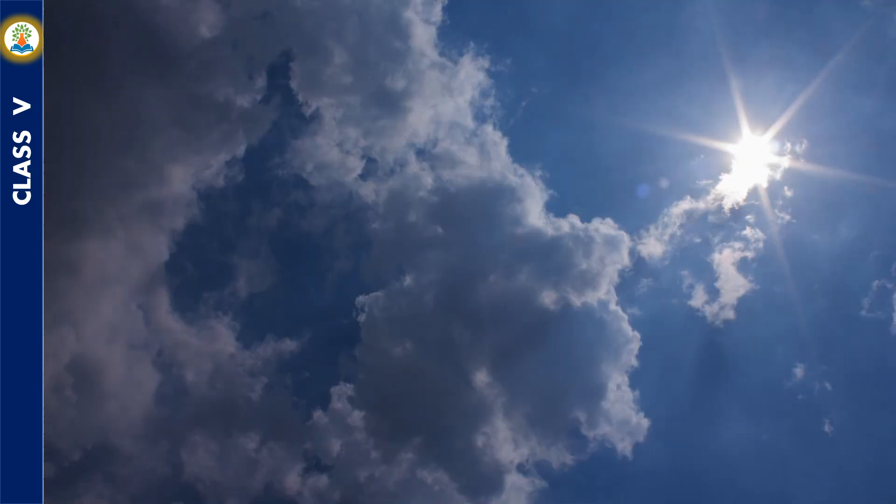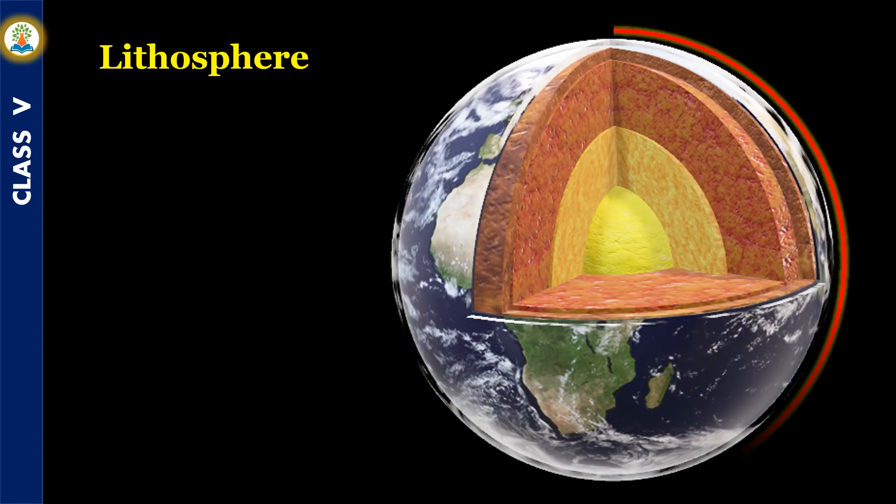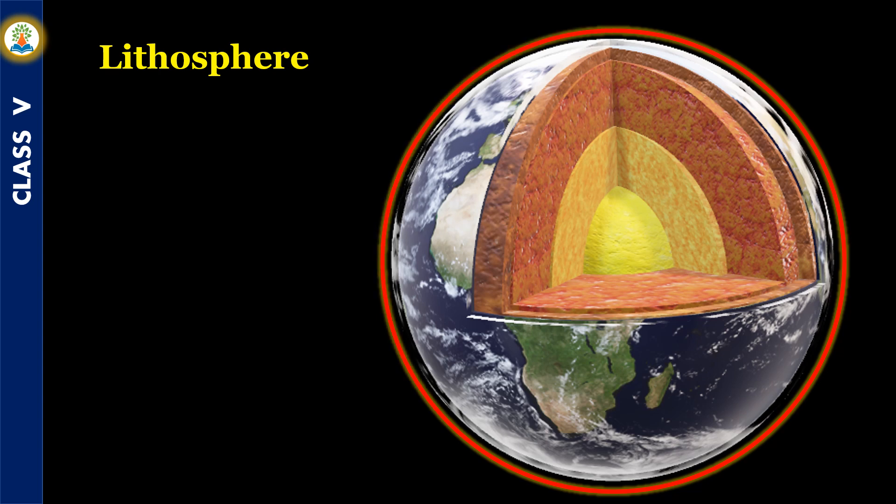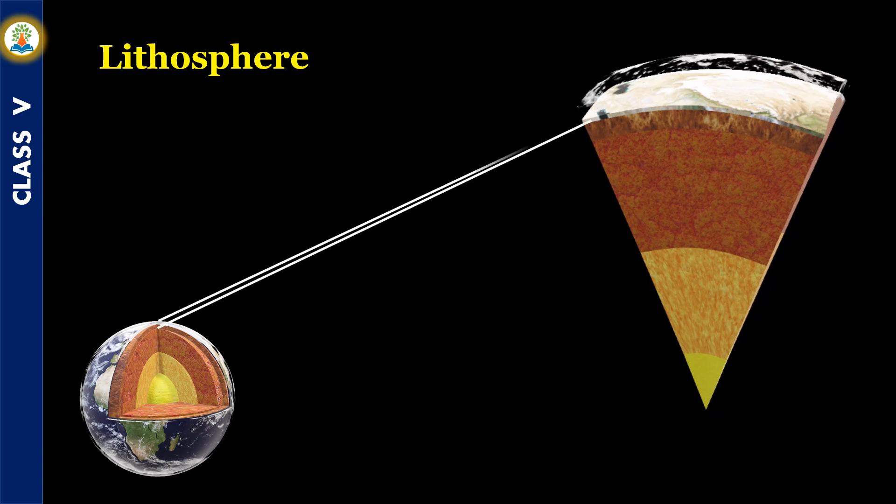The outermost solid surface of the Earth that is made up of solid rocks and soil is known as the lithosphere. Lithosphere is the thinnest layer of the Earth and is also known as the crust. Below the lithosphere there are two more layers: the mantle and the core. The mantle is the middle layer which is thicker than the crust but thinner than the core. Mantle is found below the continents and under the oceans.